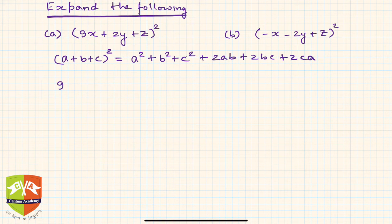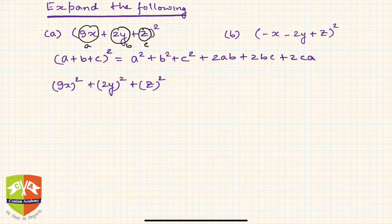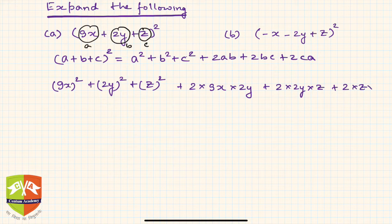So it is (9x)² + (2y)² + z². We are treating 9x as a, 2y as b, and z as c — these are the three terms and we deal with them separately. Further, it is 2×(9x)×(2y) + 2×(2y)×z + 2×z×(9x).